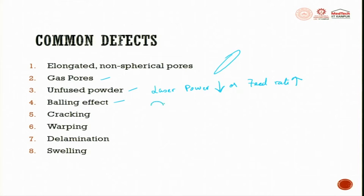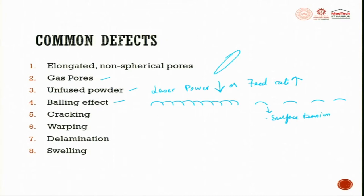Balling effect means: when we try to melt powder, the metal powder should melt and form one single line. But if this does not happen and it forms something irregular, it is called the balling effect. It depends on the surface tension of the molten material relative to viscosity, thermal gradient, and laser power and feed rate. Balling effect is very common especially in laser sintering processes.